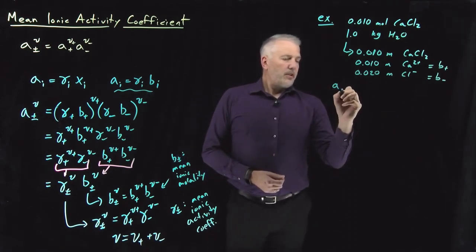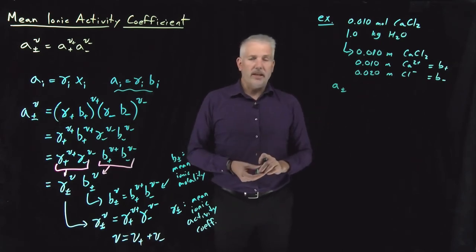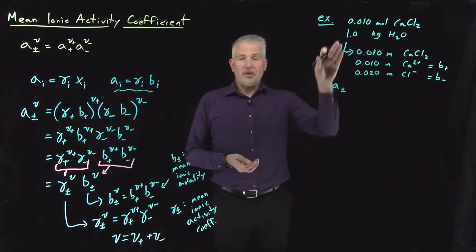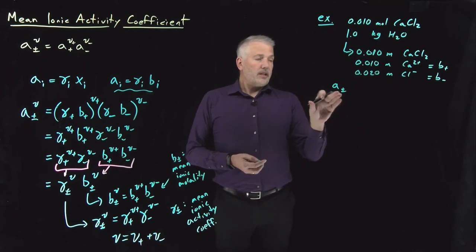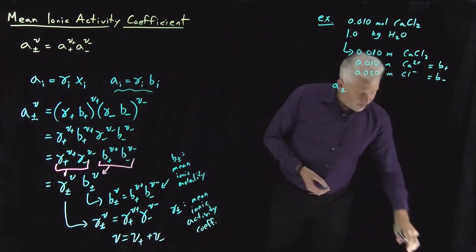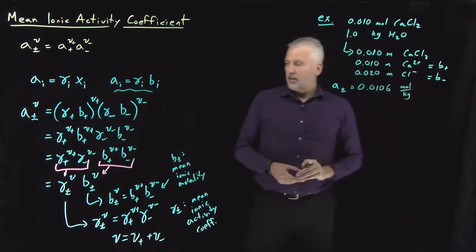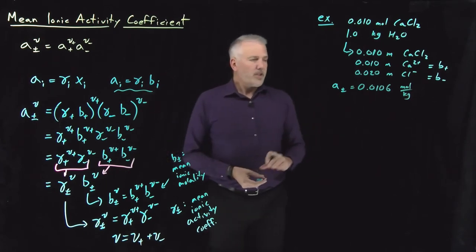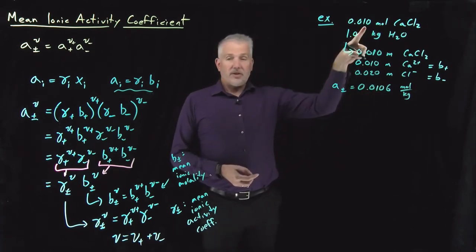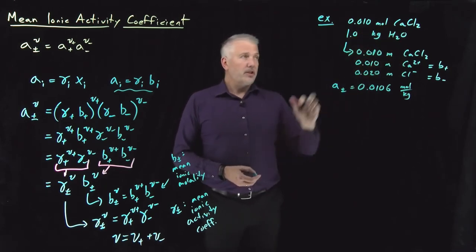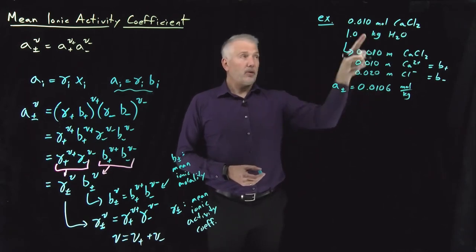If we've measured the activity of the solute in that solution — we can't measure the calcium and chloride activities separately, but measuring something like the vapor pressure depression of the solution gives us the mean ionic activity of the solute as a whole — and that value is measured to be 0.0106 on a molal scale. That number looks close to the concentration of the solution, but this solution puts three moles of ions into solution per mole of calcium chloride dissolved, so it's actually considerably lower than expected for a 0.01 molal solution of this salt.